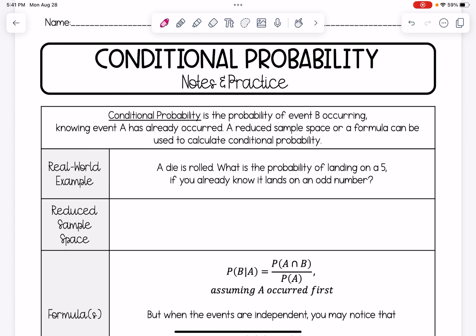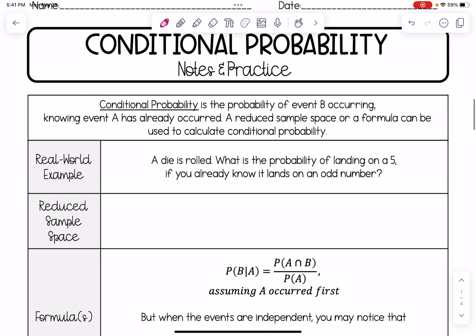Let's look at an example. A die is rolled. What's the probability of landing on a 5 if you already know it lands on an odd number? Normally when you roll a die, if we were to make a sample space, we would have 1, 2, 3, 4, 5, and 6. Those would be our options when we roll a die.